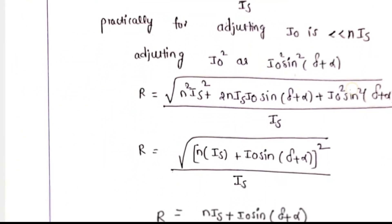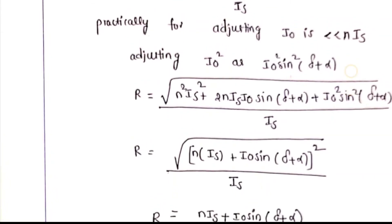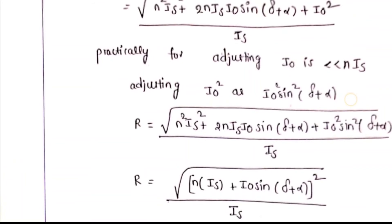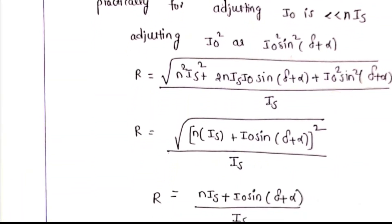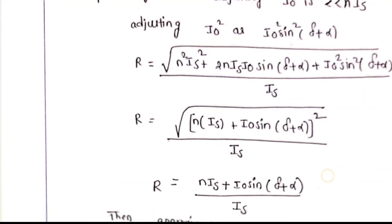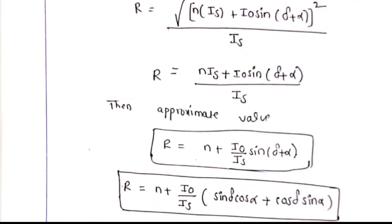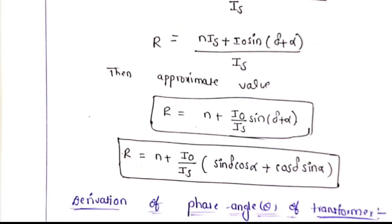Practically, I0 is very, very small compared to N·IS. After substituting, the transformation ratio R equals IP by IS. Substituting the derived value of IP, you get the approximate value: R equals N plus (I0/IS)·sin(delta)·cos(alpha) plus cos(delta)·sin(alpha). This is the actual transformation ratio: R equals N plus (I0/IS)·[sin(delta)·cos(alpha) + cos(delta)·sin(alpha)].